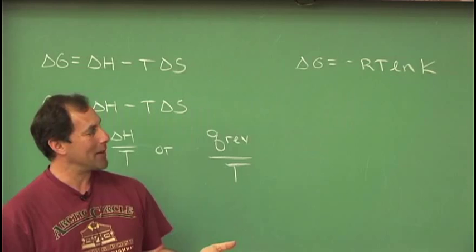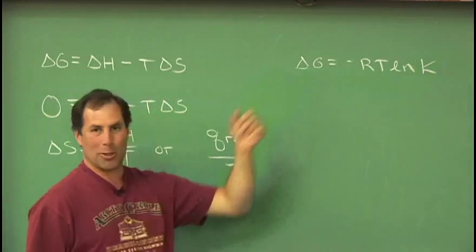You measure the equilibrium constant. So if you have a system with a couple of gases, you measure products over reactants. This gives it to you, and we can go ahead and publish delta G values.